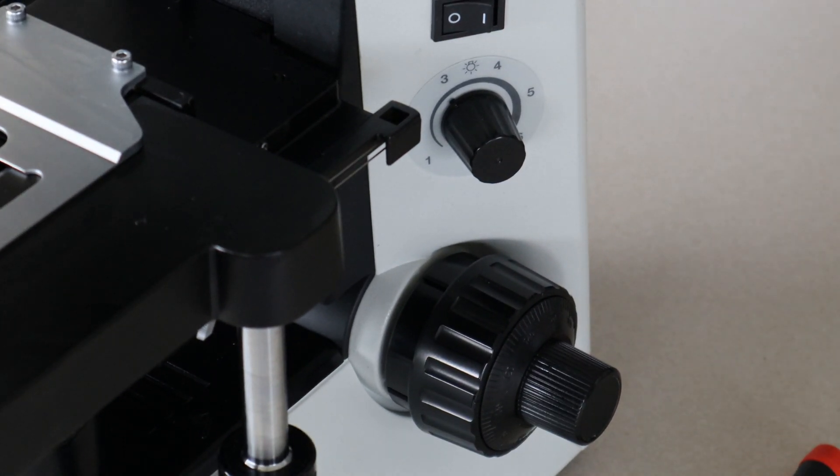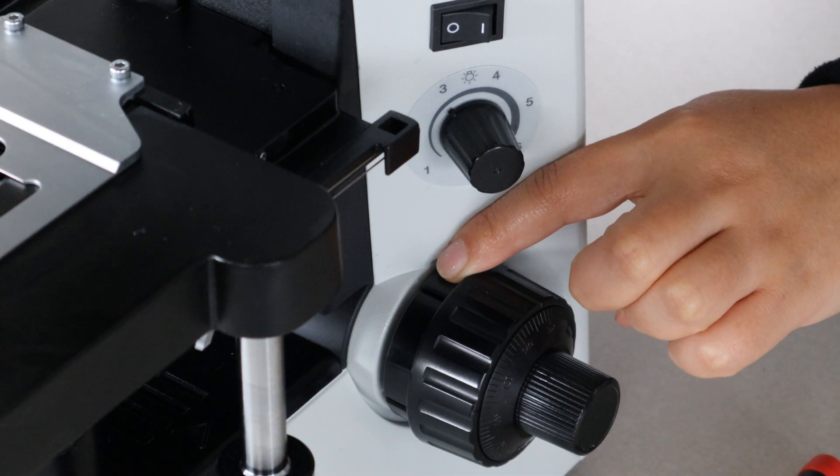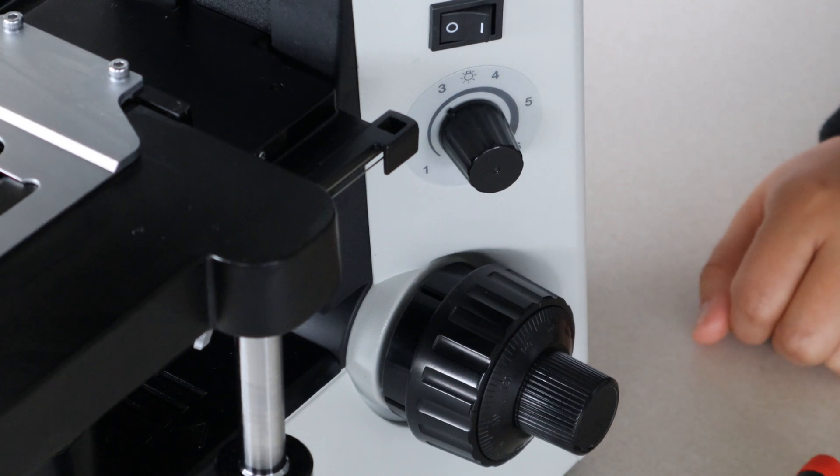All right, you'll see here we have your coarse focus, and just behind that is that black ring with the multiple slots in it, and that is going to be your tension adjustment.